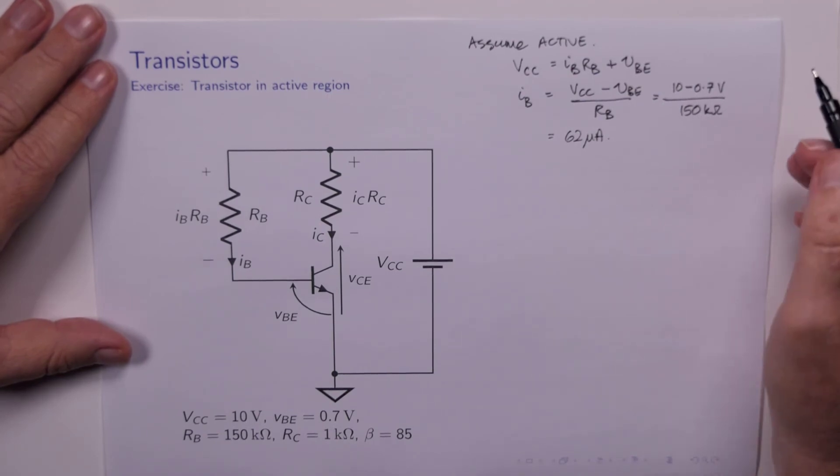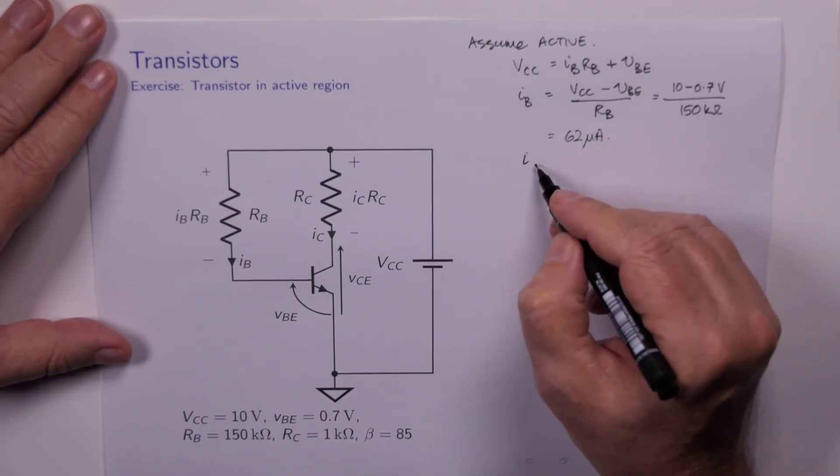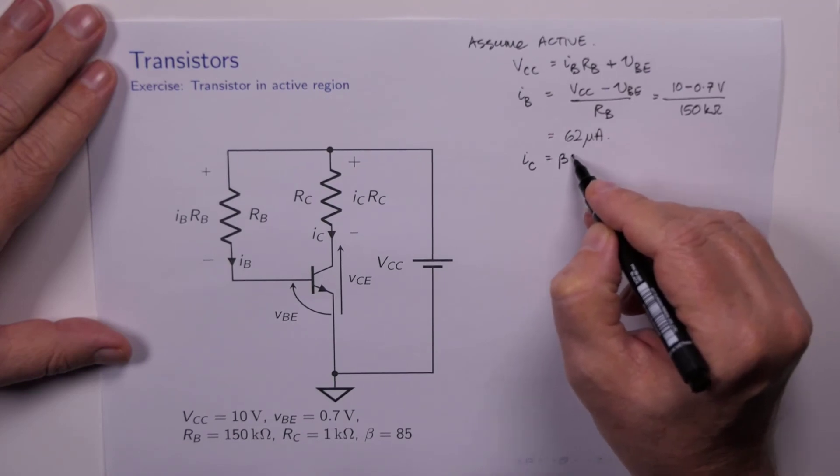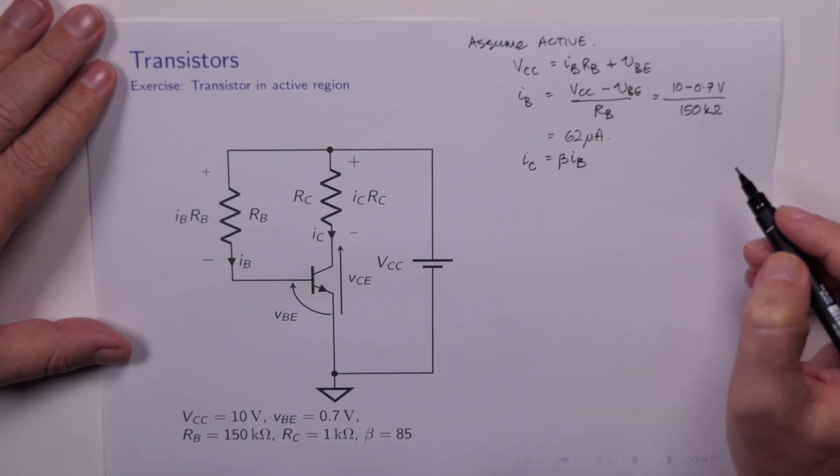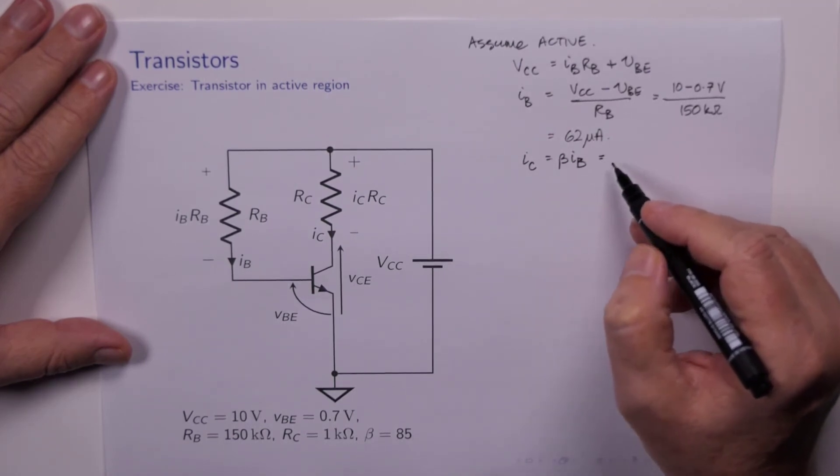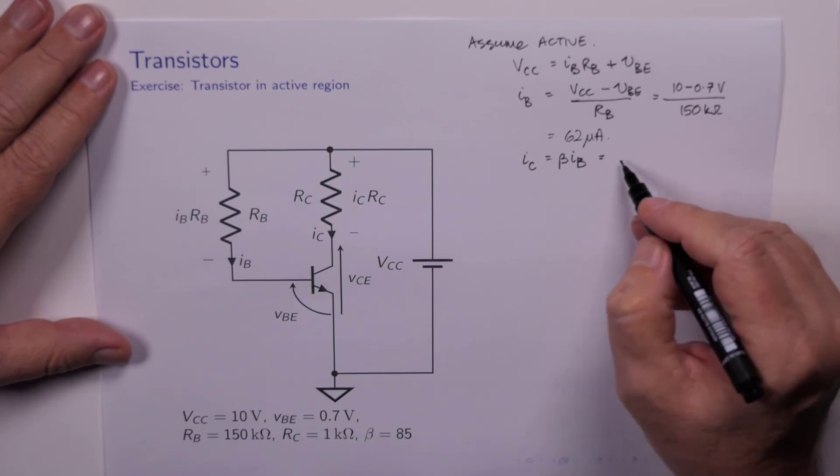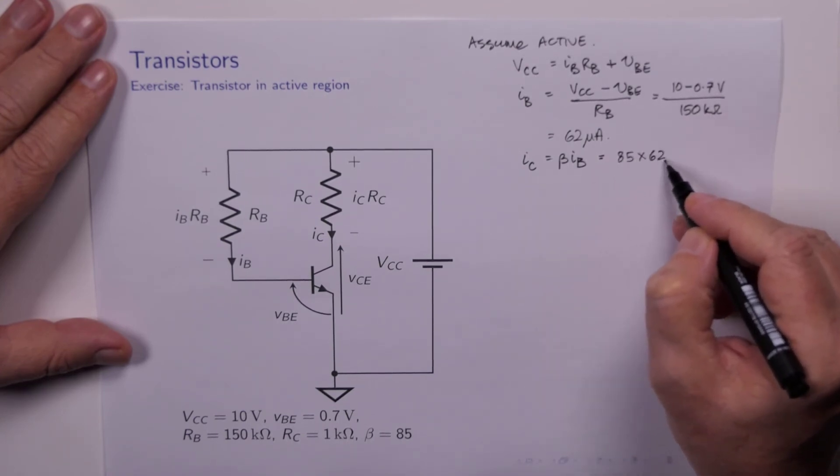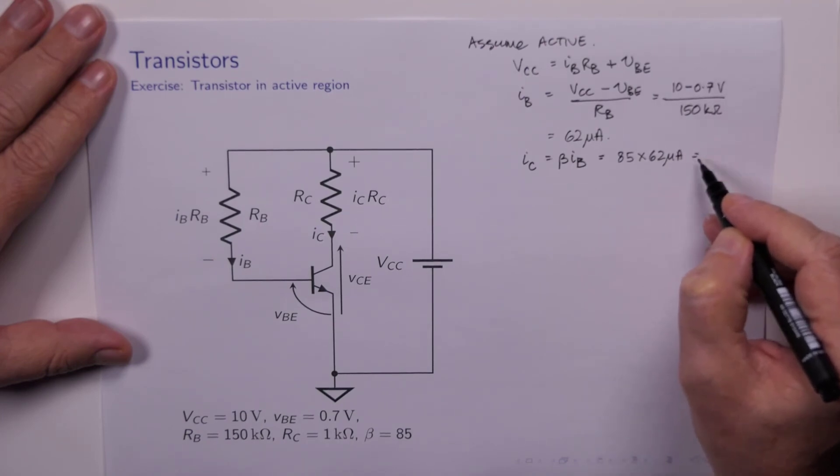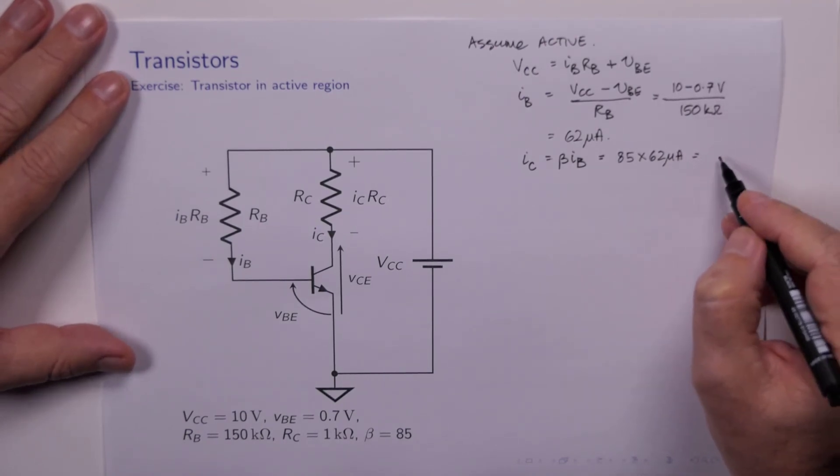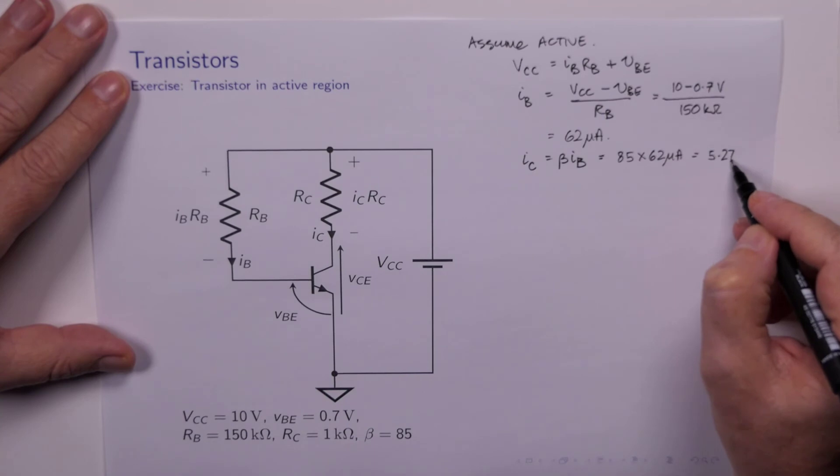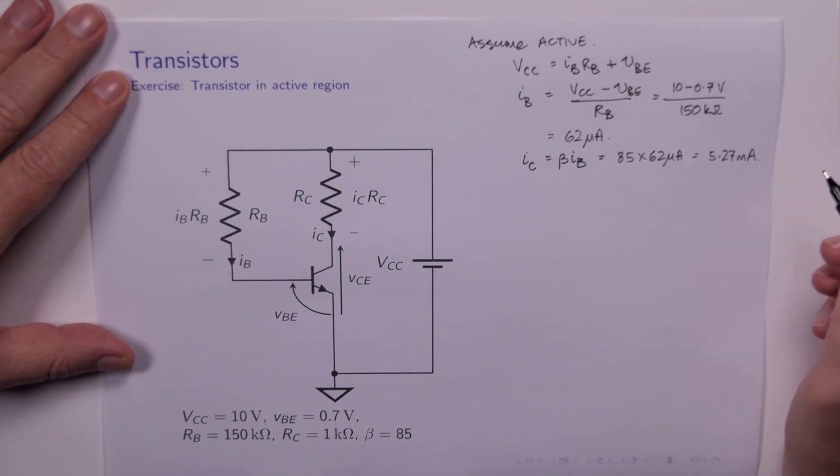62 microamps. Now we've assumed that it's active. So that means that we think that this relationship applies. So that means that the collector current is going to be 85 times 62 microamps.